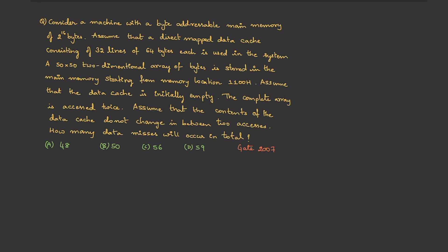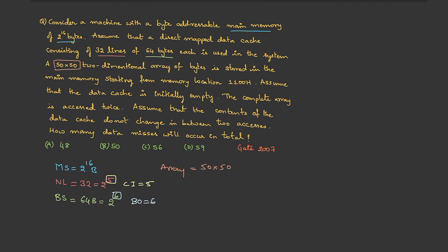Let's write the given data. Main memory size is 2^16 bytes. Number of cache lines is 32, which is 2^5, so 5 bits for the cache index. Block size is 64 bytes, which is 2^6, so 6 bits for the block offset. The array is 50×50, which means 2500 bytes. The starting memory location is 1100H — H represents hexadecimal.